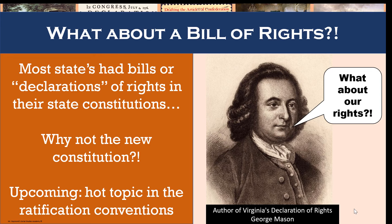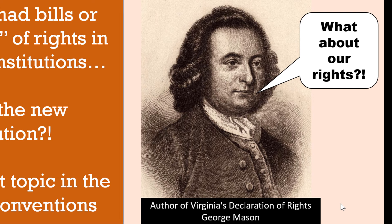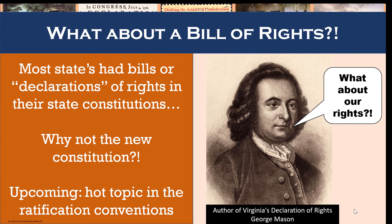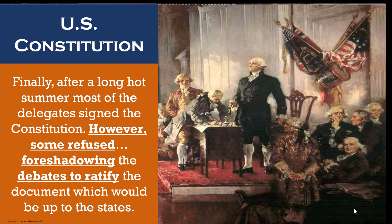One last question on the minds of some delegates, like the author of Virginia's Declaration of Rights, George Mason — who ultimately refused to sign the document — was: where was a Declaration of Rights? After all, many states had a list of protected rights in their state constitutions. We're going to come back to that question and its ultimate solution, which you probably already know. The truth is that most of the delegates were just ready to go home after a hot summer of debate. Finally, the Constitution was completed and signed. However, three prominent delegates refused to add their signature, foreshadowing the looming debate over whether the Constitution would be ratified by the states — which will be the topic of our lecture next time.